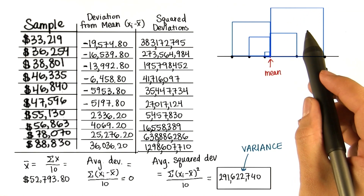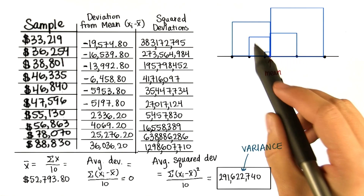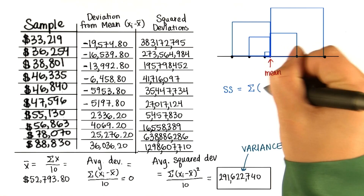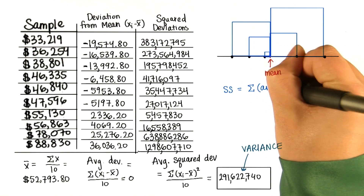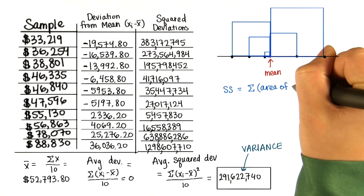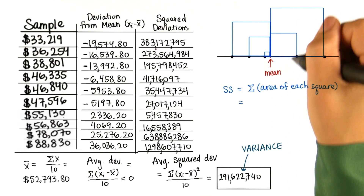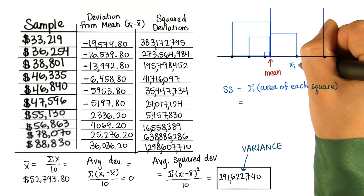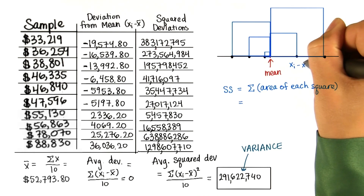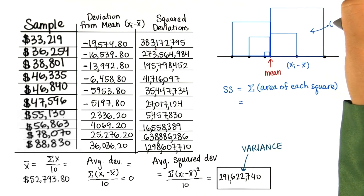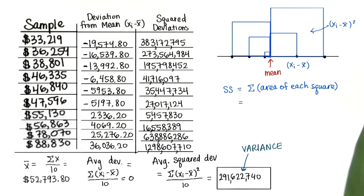So we have all of these squares, and the sum of squares is basically the sum of the area of each square, where each distance is x_i minus x-bar, and each area is (x_i minus x-bar) squared.